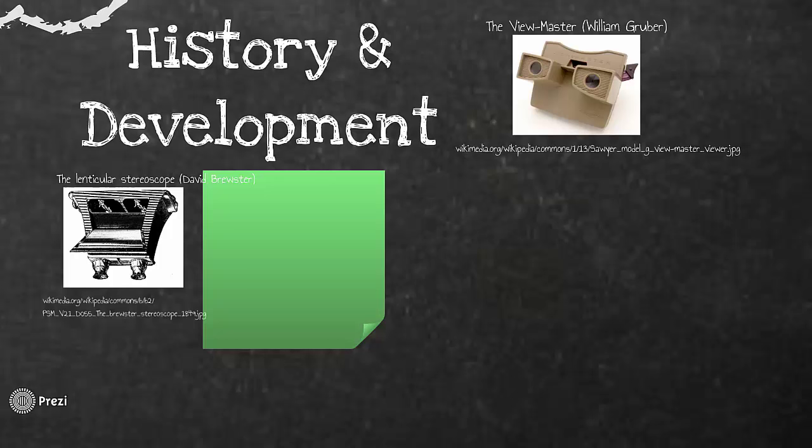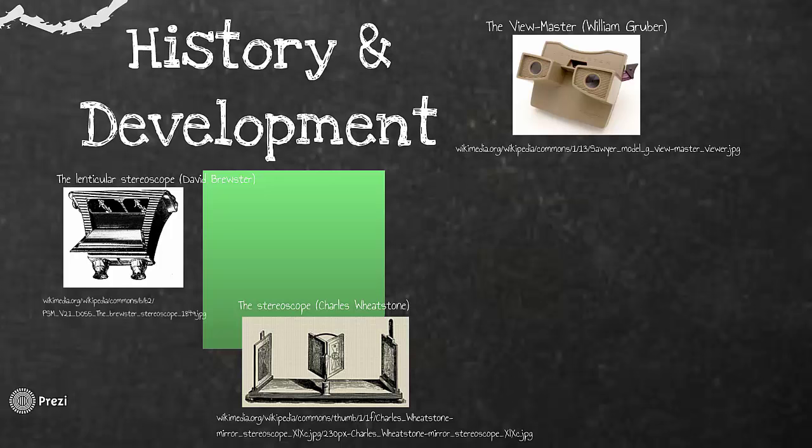In 1838, the stereoscopic photo viewer was created by Charles Wheatstone. He demonstrated that the brain processes two different dimensional images from each eye into a single three-dimensional object. Viewing two side-by-side stereoscopic images through the stereoscope gave the user a sense of depth and immersion — we can see in this image how the stereoscopic photo looks.